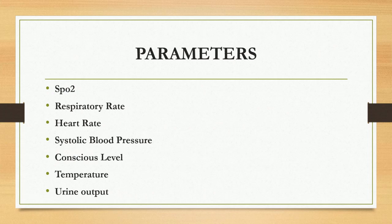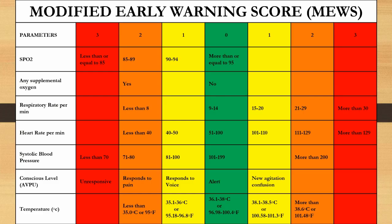It's mainly applicable for adult patients and the parameters are oxygen saturation, respiratory rate, heart rate, systolic blood pressure, conscious level, temperature, and urine output. This scoring is not uniform universally — it may vary from hospital to hospital based on its policies and protocols, but is almost the same.